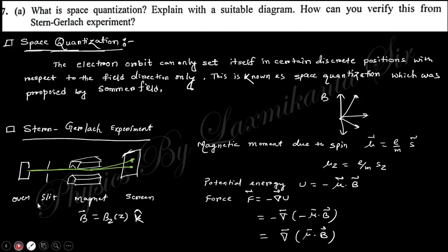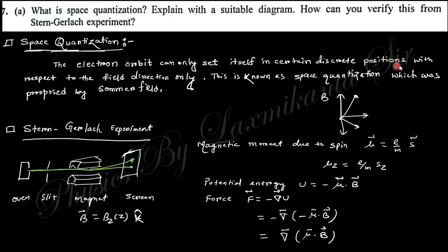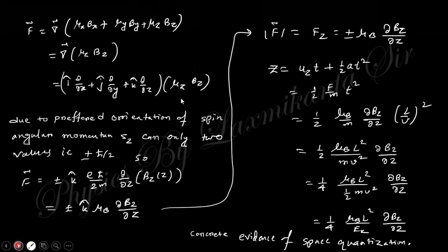What is space quantization? Space quantization means that the orbital or spin angular momentum can only take components in specific directions — not all directions — so it is quantized. This is demonstrated experimentally in the Stern-Gerlach experiment, where the beam splits due to spin, confirming spatial quantization.